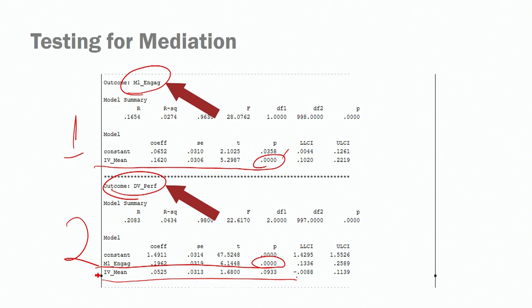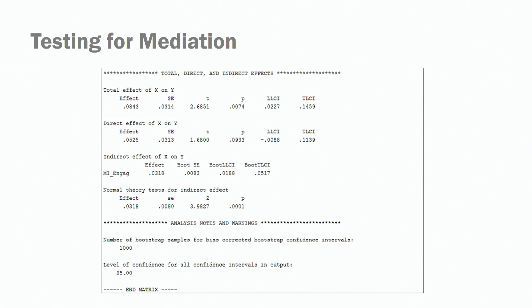You'll notice that we are controlling for our independent variable, which becomes non-significant — the relationship with performance is not significant at this point. If you keep scrolling down, you'll see the effects composition. The total effect is significant — the total effect is the indirect effect plus the direct effect. If we look at the direct effect, it is not significant. So when we have the mediator in the model, the relationship between meaningfulness and performance is not significant.